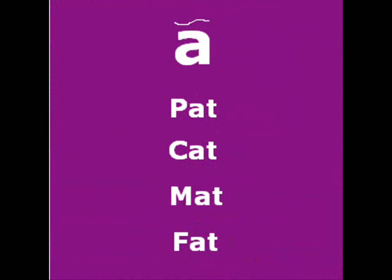The first symbol is a form of A. The words that use this particular symbol are pronounced as pat, cat, mat, fat. It means the sound of this particular symbol is 'A' (as in pat) and not 'A' (as in say).